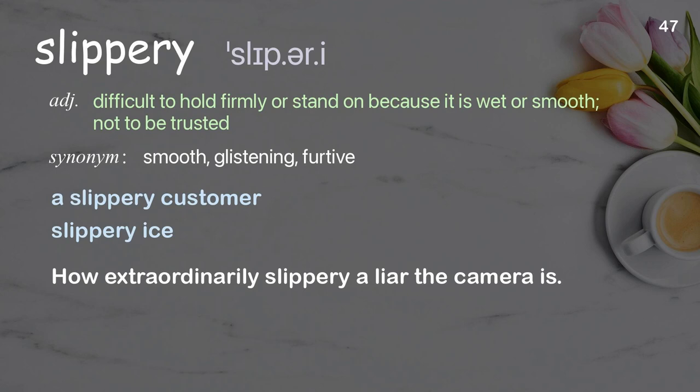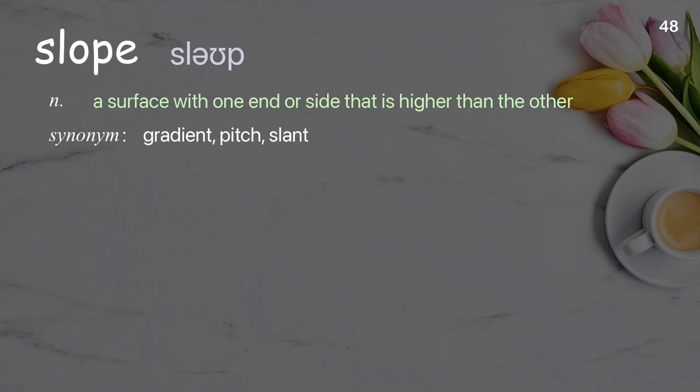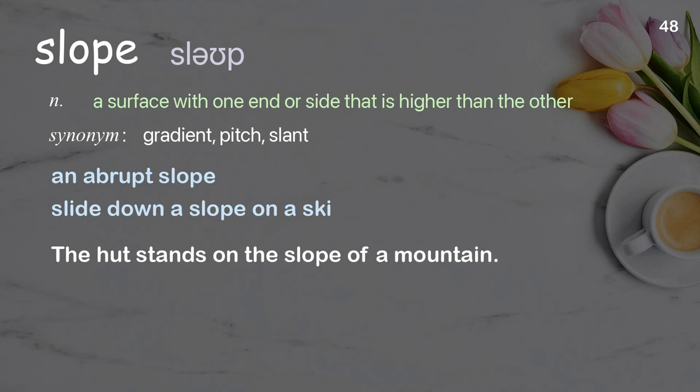Slope: a surface with one end or side that is higher than the other.